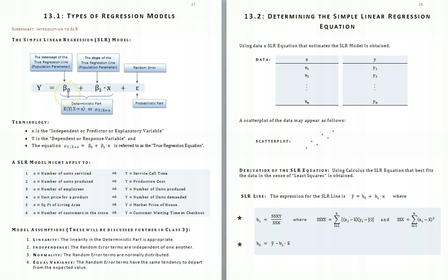Beta 0 refers to the intercept and Beta 1 refers to the slope of the linear relationship. This part of the model is referred to as the deterministic part of the model. You may see this expression set equal to this linear expression and referred to as the true regression equation.